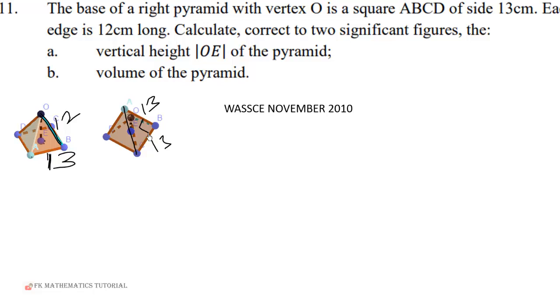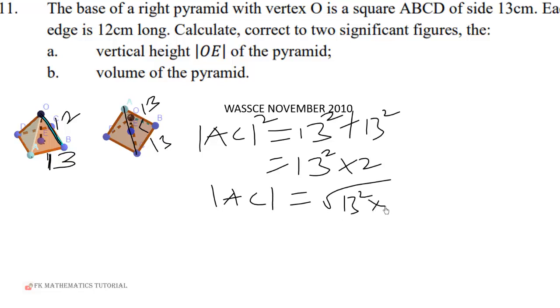So AC squared will be equal to 13 squared plus 13 squared, which is 13 squared times 2. So AC will be equal to square root of 13 squared times 2. 13 squared square root would be 13 times the square root of 2, which is just 13√2.